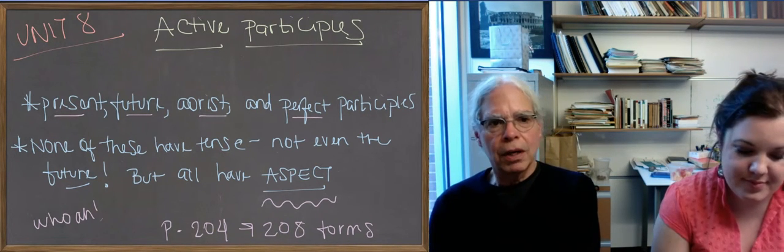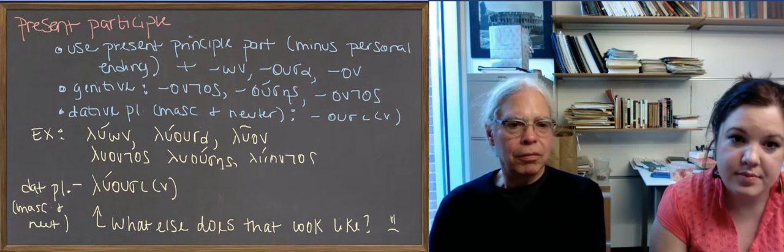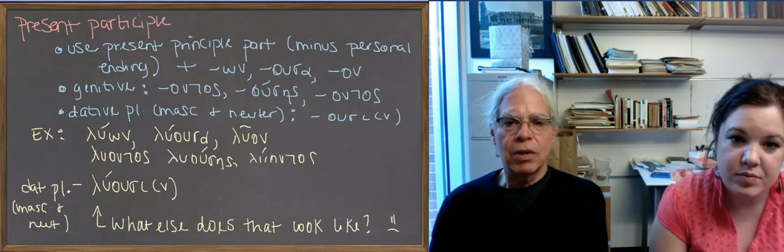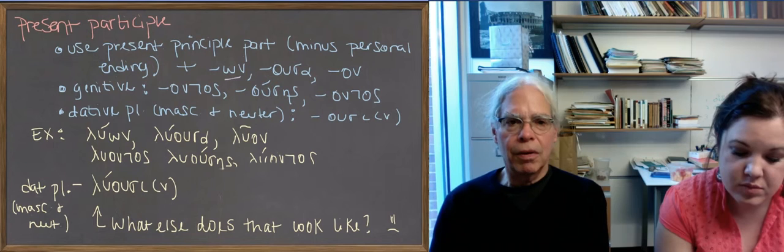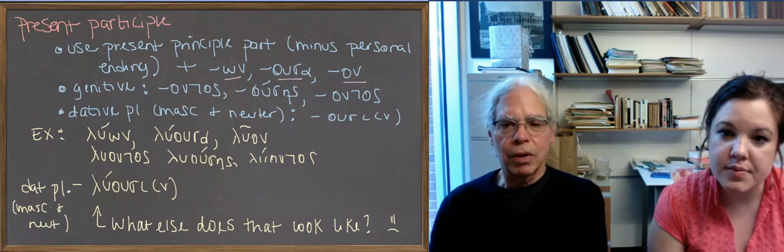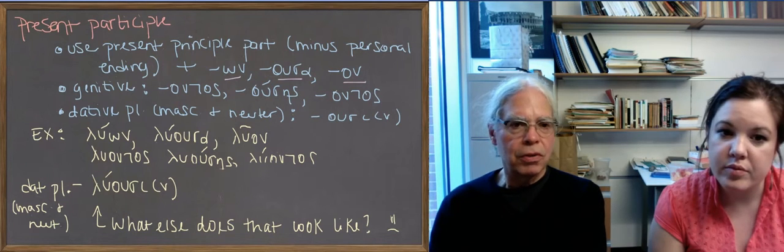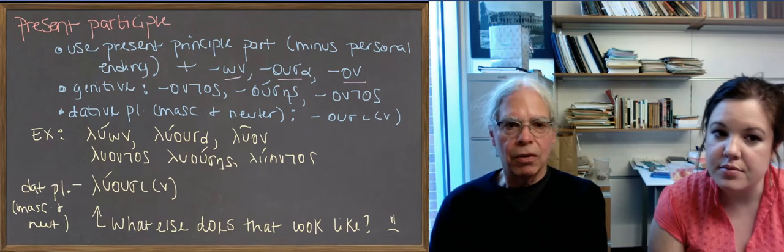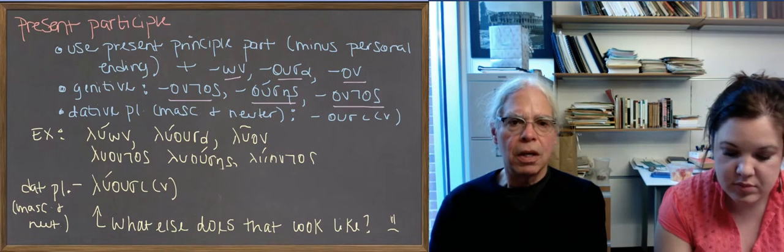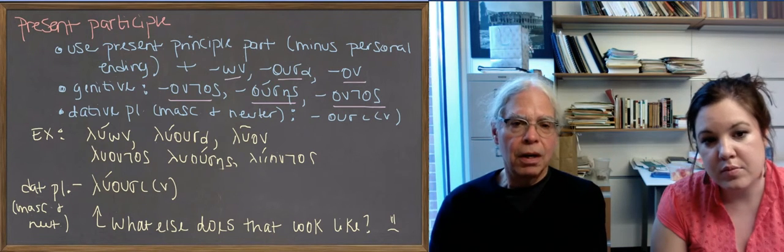The first thing we're going to look at is how to form present active participles. So the rule is that you start with the first principal part. For luo, it's luo, and what you do is you remove the personal ending, and you add an adjectival suffix, which has three genders: ōn, ousa, on. We've already seen third declension nouns that end in ōn, like gerōn. And the neuter one, on, is what you would expect of an ōn masculine form. But these adjectives, they all have three genders. All these participles have three genders. So we've also given you the genitive of the ōn, ousa, on nominatives. It's ontos. So that means that's the base. The o-n-t is the base for all the creation of all the other forms. Ontos, ousēs, that tells you that it's the thalassa type feminine. And then ontos, again, for the neuter.